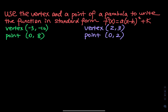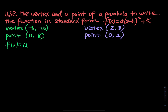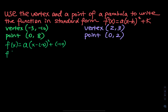So using the vertex, here is what we can do. f of x equals to — we don't know a yet, so a remains as a — and then x minus h square plus k, negative 10. So this is f of x equals to a times x plus 3 square minus 10.